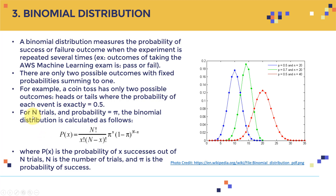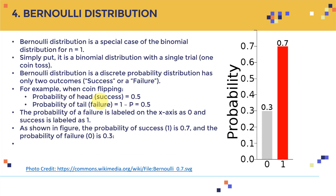For the binomial distribution equation, if you have n trials — say 10 — you substitute n equals ten into the formula. P of X is the probability of X successes out of n trials, where n is the number of trials and pi is the probability of success. This gives you an idea of what binomial distribution can be used for.